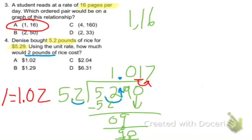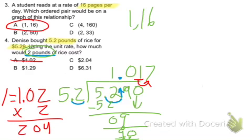But if we look back up here, we want 2 pounds. So 1.02 is not the answer. That's 1 pound. So we have to multiply that by 2. So you get 402. Move it over twice. 2.04. The answer to 4 is C.